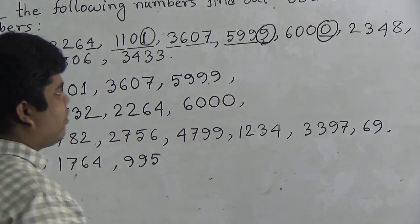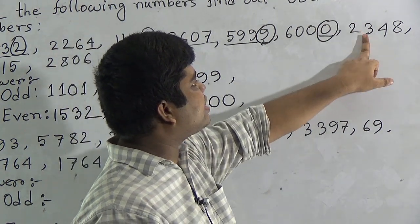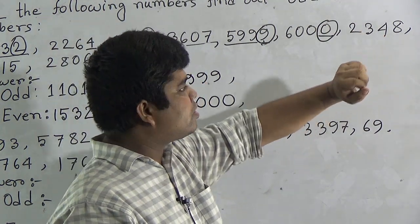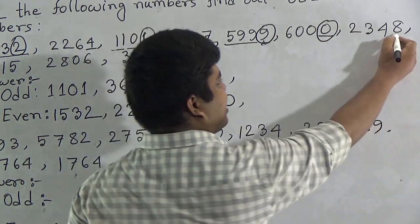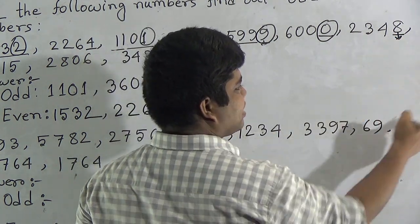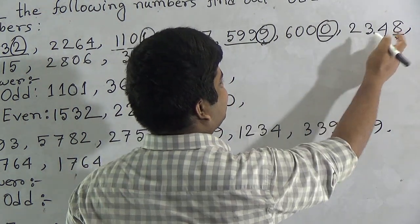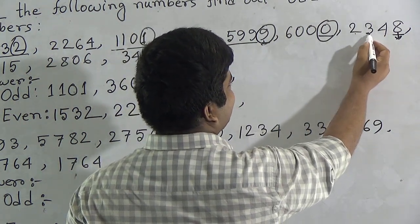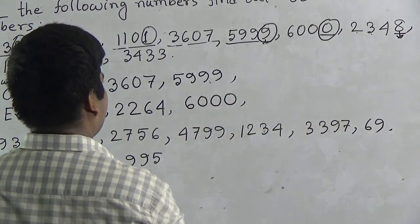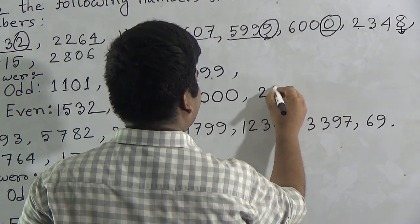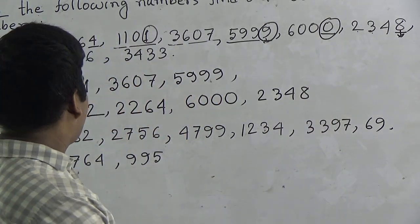Our next number is two thousand three hundred forty-eight. We notice the ones place digit, which is eight. Eight is an even number, so two thousand three hundred forty-eight is even, and we write two thousand three hundred forty-eight in the even number section.